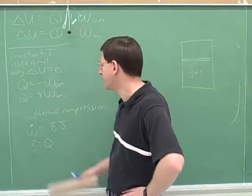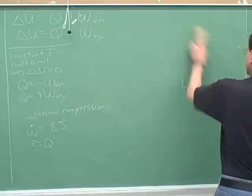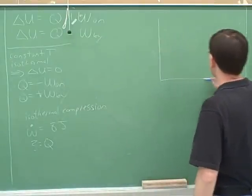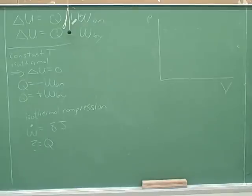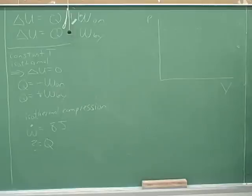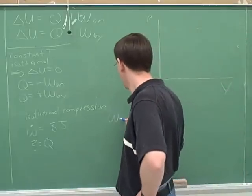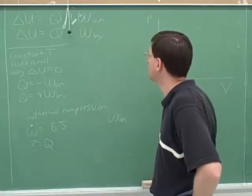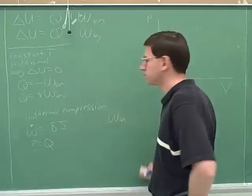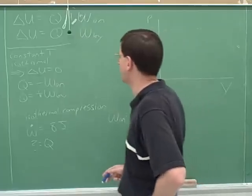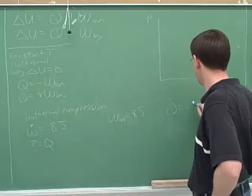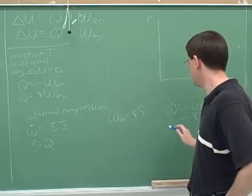Let's say we have an isothermal compression, and the magnitude of the work is 8 joules. Let's find Q. We have an isothermal compression — work is done on the gas. So we can use this equation: Q equals negative work on, which gives Q equals negative 8 joules.